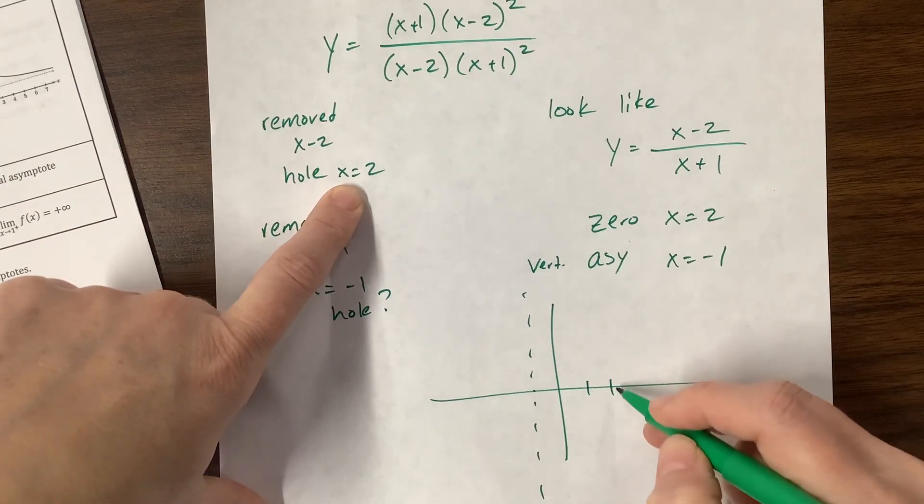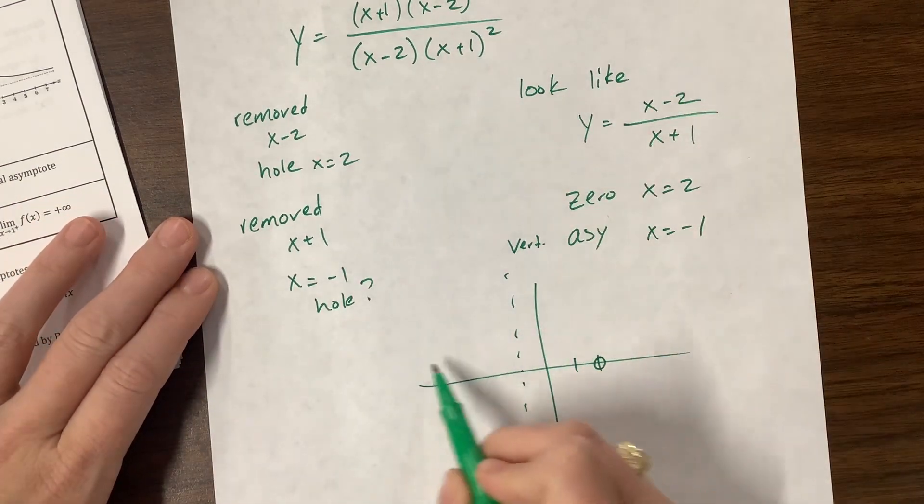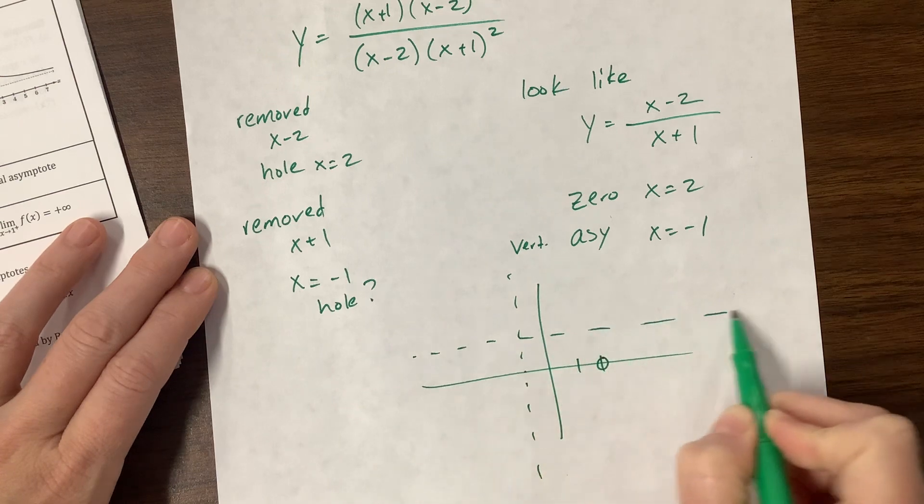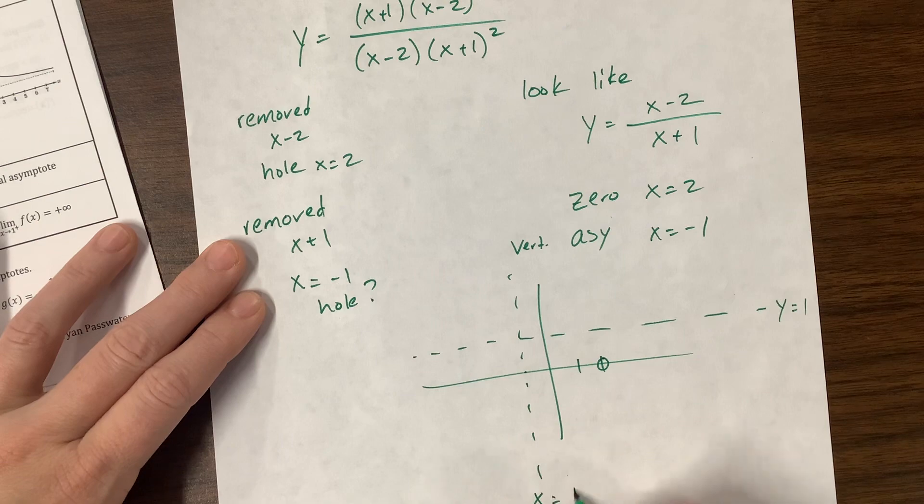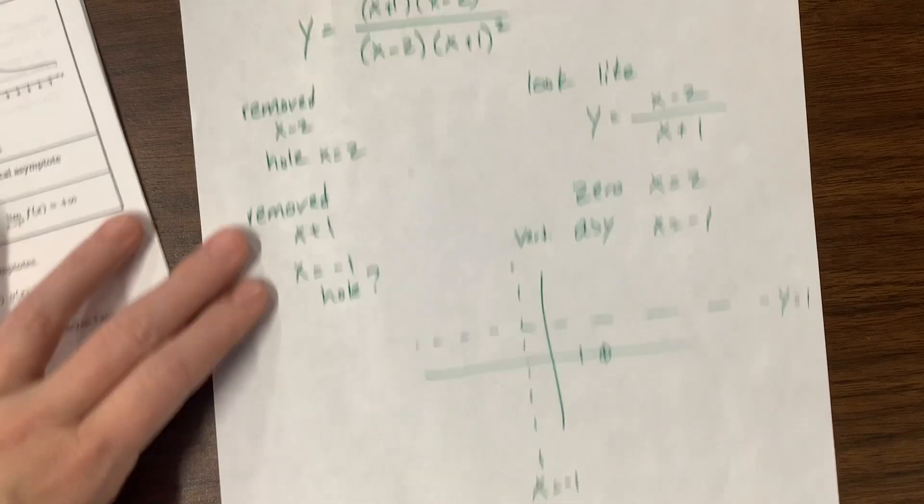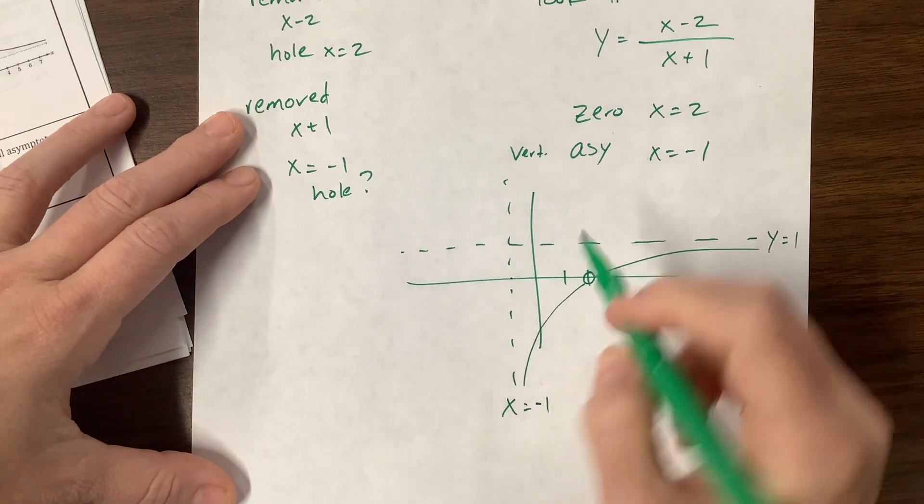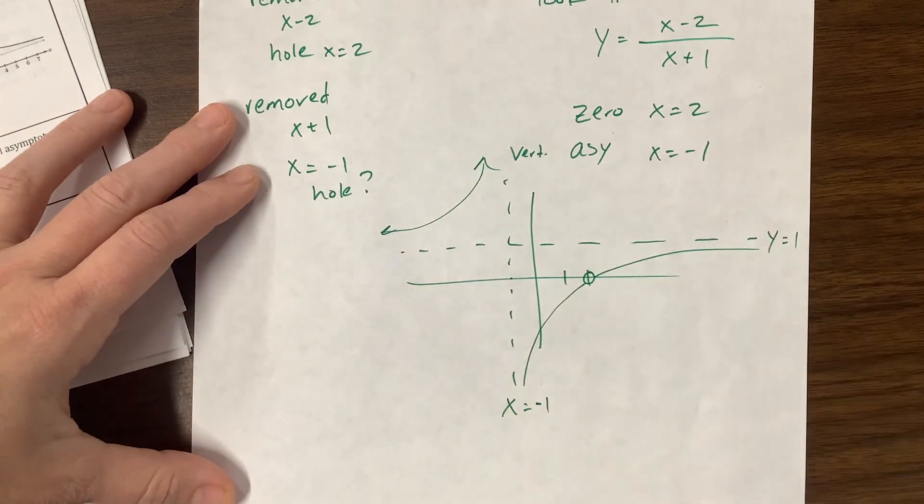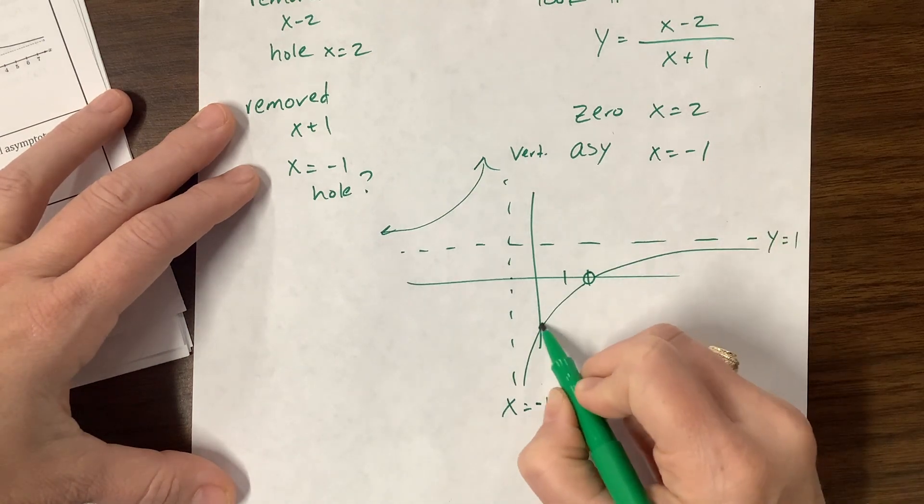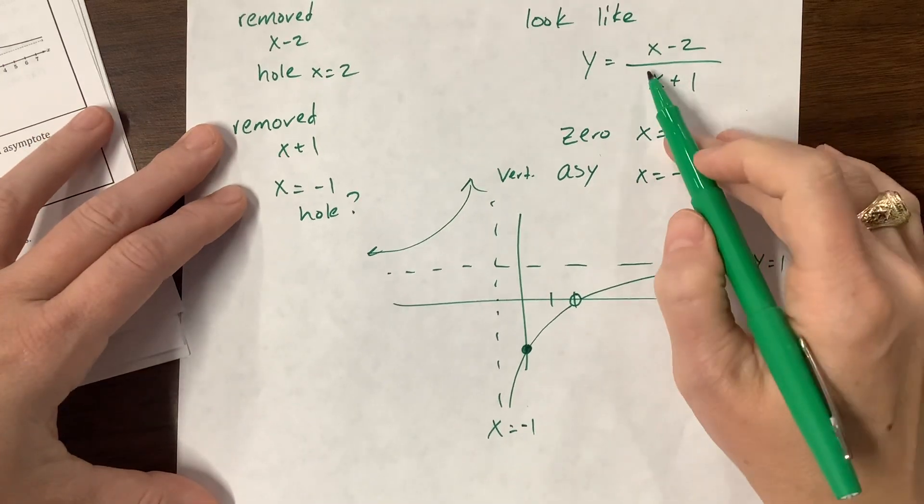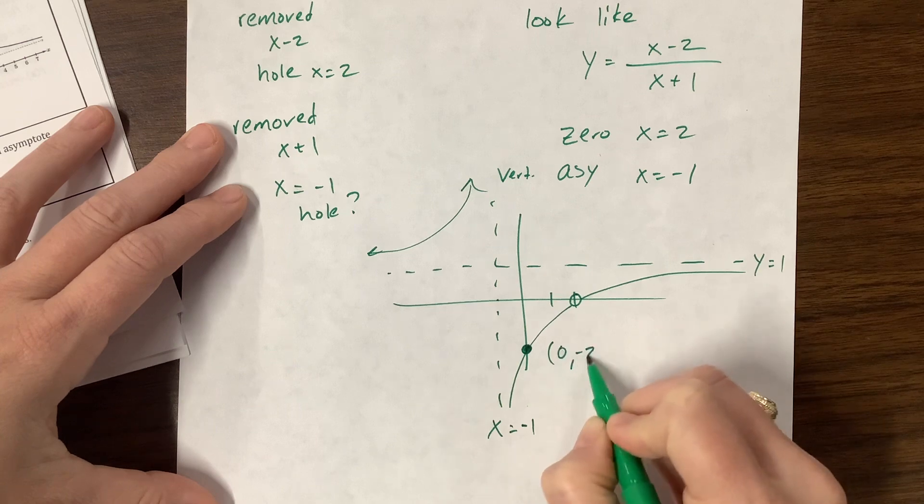So here at two, we'd have the hole right here. And so then this is the same degree. So we also have a horizontal asymptote when y is equal to one. And this is at negative one. So we're looking something like this and something like this with a hole there at the point two. And we can double check. Let's plug in zero. So zero minus two is negative two over one. So this would be the point zero, negative two.